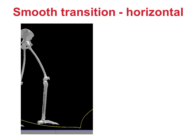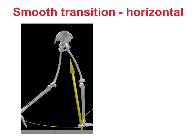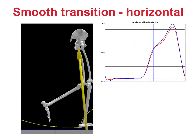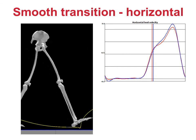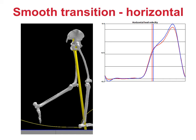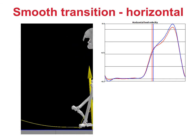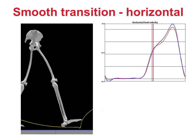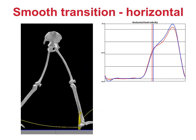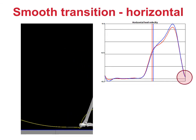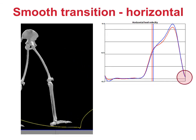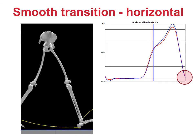Jim Gage has likened this to the landing of an aeroplane. If we plot the horizontal velocity of this point, you'll see that its top speed is 4.4 metres per second in mid-swing — in other words, your foot in mid-swing is travelling almost three times as fast as you are. But by foot contact this has dropped to around 0.2 metres per second, or about five percent of its top speed.